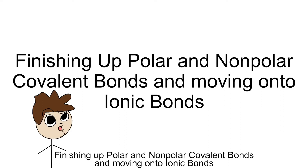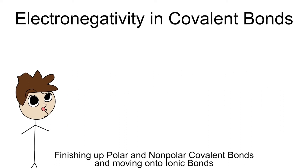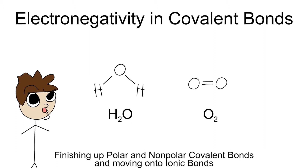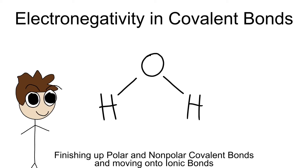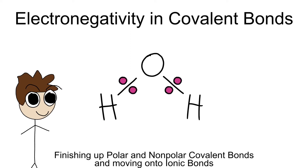Let's go further into how electronegativity affects covalent bonding. A simple example would be a single water molecule, dubbed as H2O, compared to a molecule of oxygen, O2. It's pretty obvious that the shape and structure we see here in water is vastly different. The structure of water consists of one oxygen connected to two different hydrogen atoms by sharing four available valence electrons.